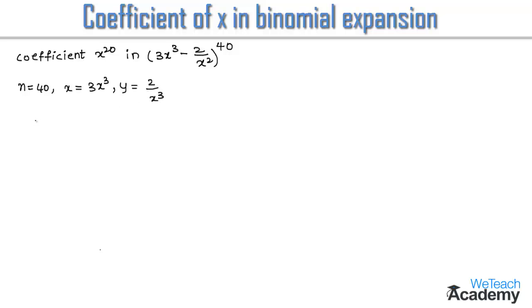We know that the general term in the expansion of (x minus y) whole power n is given by: T(r+1) is equal to minus 1 whole power r, into nCr, into x power (n minus r), into y power r.